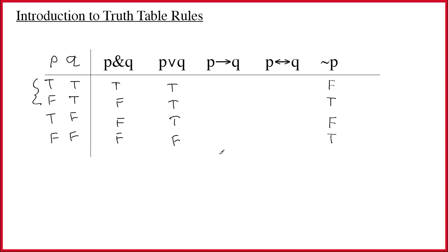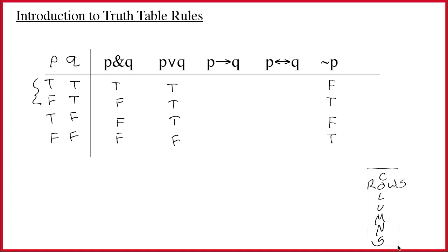I should pause and point out that rows go across and columns go up and down. Columns are like ancient Greek columns — they go up and down. They use the same terminology any place you find rows and columns, like in an Excel spreadsheet. Back to the table — the tilde is simple.